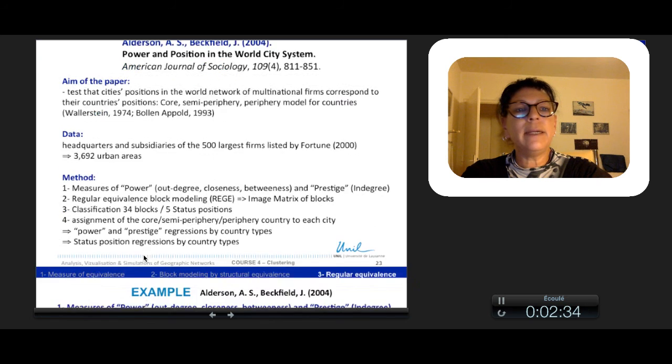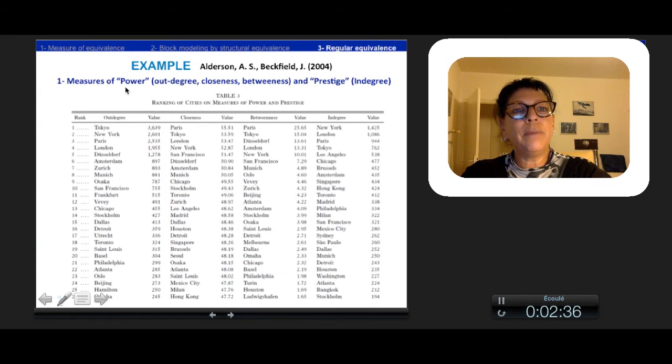Firstly, they measure power with out-degree, closeness, and betweenness, ranking the cities with these structural measures. They also measure the prestige here, with New York which is first, so the attractiveness within degree, and then according to the network between the cities.